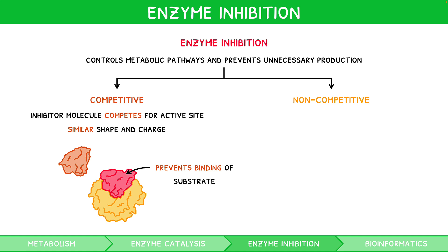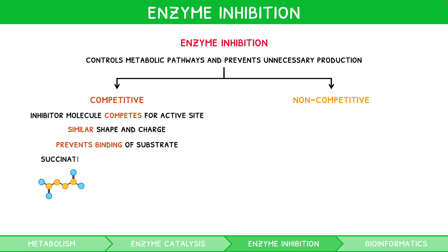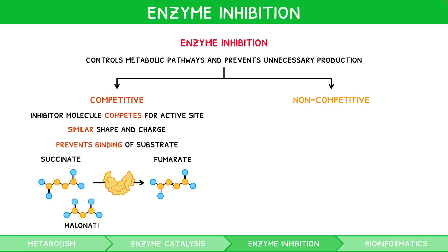An example commonly tested in the exam is the conversion of succinate to fumarate. Typically, this occurs in a one-stage reaction. However, when the competitive inhibitor malonate is present, it forms a malonate-enzyme complex to prevent the succinate from binding to the active site, thus inhibiting fumarate formation.